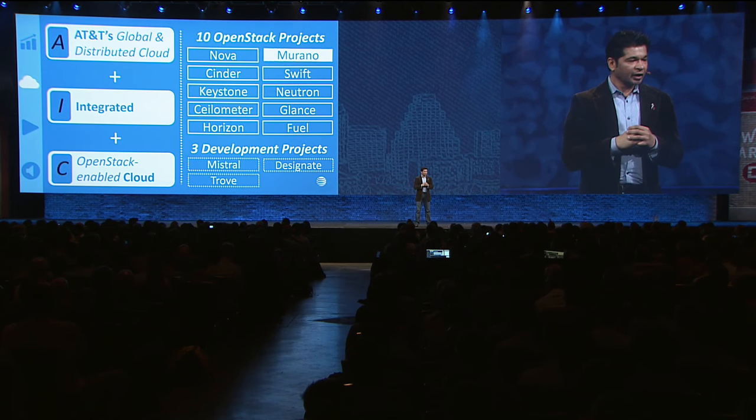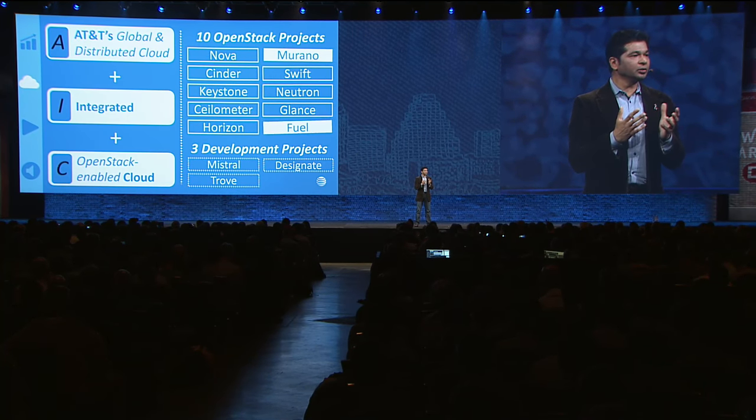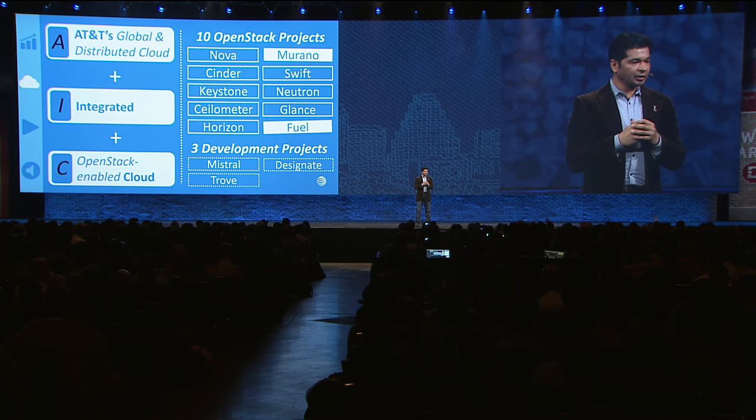Today, the AIC production platform is already leveraging 10 OpenStack projects, and before the end of the year we'll be adding at least three more. The rapid evolution of OpenStack towards providing a full set of capabilities for cloud operators and developers is something we fully embrace. In our latest AIC release, we introduced a new Big Tent project, Murano, which is a critical enabler in automating virtual function tenant onboarding across multiple AIC zones. Another example is Fuel, which we have fully adopted and industrialized to automate the deployment of AIC zones.